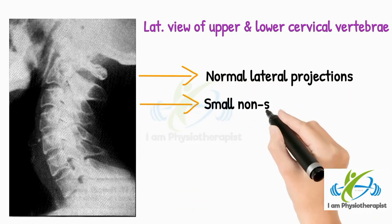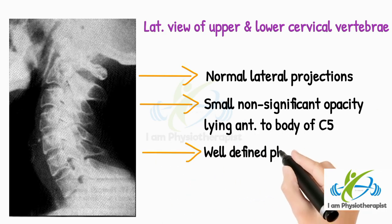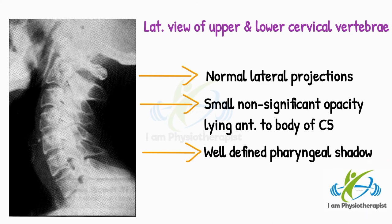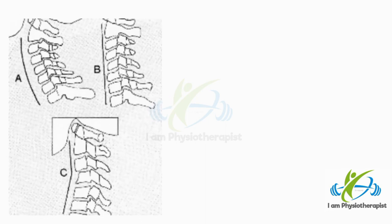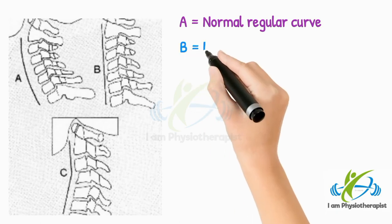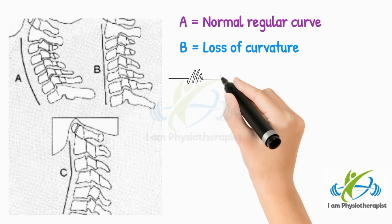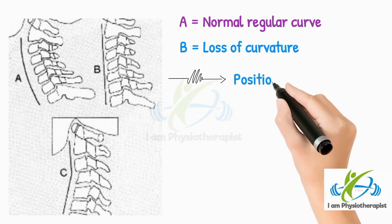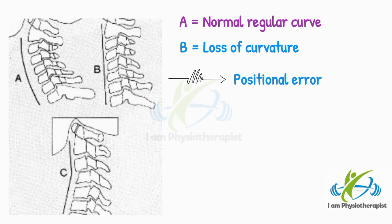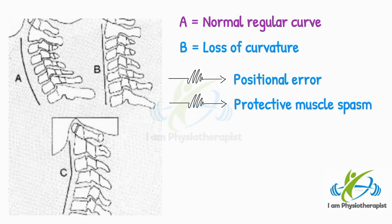There is a small non-significant opacity lying anterior to the body of C5, and a well-defined pharyngeal shadow. While examining the cervical X-ray, note the cervical curves. Point A shows a normal regular curve. Point B shows loss of curvature, which may be due to positional error, but in patients with chronic neck pain it may be due to protective muscle spasm.